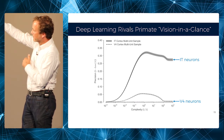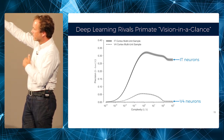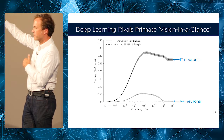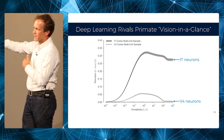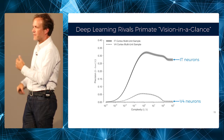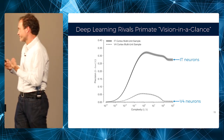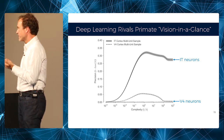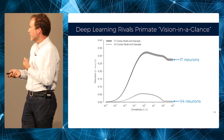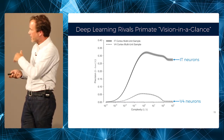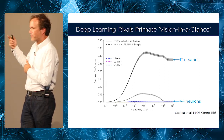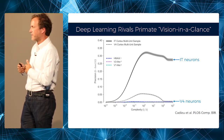Higher is better here. You can see that these IT neurons, which are at the end of this hierarchy, perform much better in recognizing an object than the early stages in the visual system. Then they took the response from artificial deep neural networks and plotted it on the same scale against the real neurons in monkey brains.